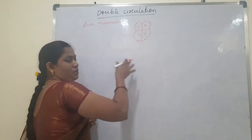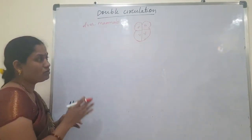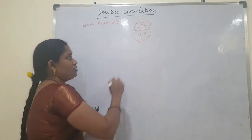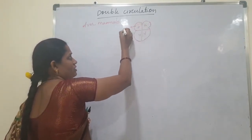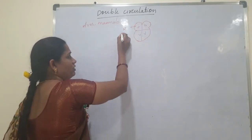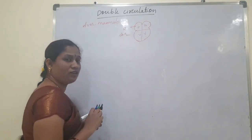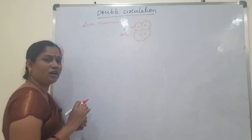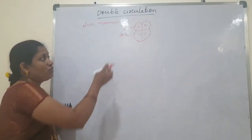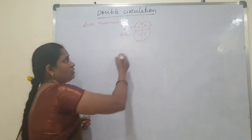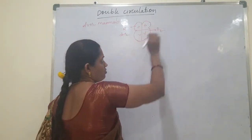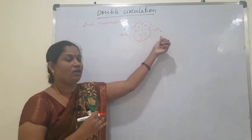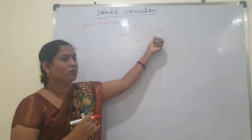These atria and ventricles are separated by septa, so the four chambers are completely divided. Always the right side of the heart circulates deoxygenated blood, and the left side of the heart circulates oxygenated blood.